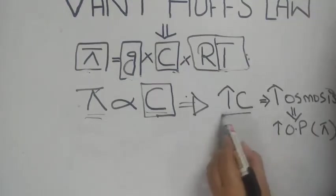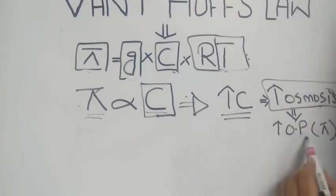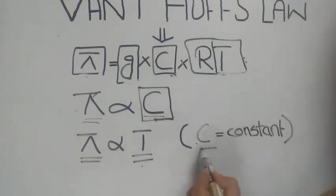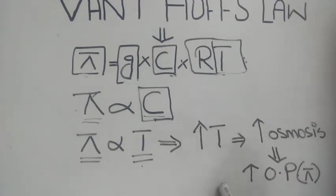Greater the concentration of solute retained in the solution that cannot cross the semi-permeable membrane, greater will be the osmosis of water and greater will be the osmotic pressure developed. Osmotic pressure is also directly proportional to temperature, provided that the concentration of solute particles is constant. Higher the temperature, greater will be the osmosis of water, because with an increase in temperature the kinetic energy of molecules increases, leading to increased osmosis and therefore increased osmotic pressure.